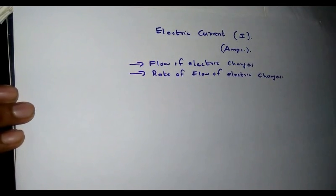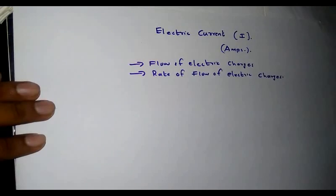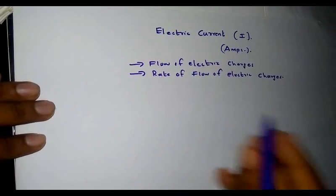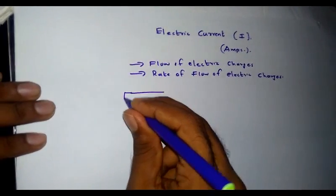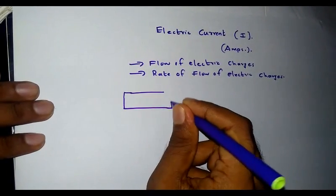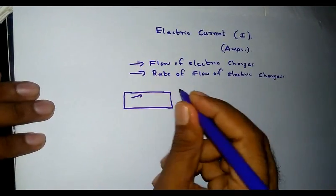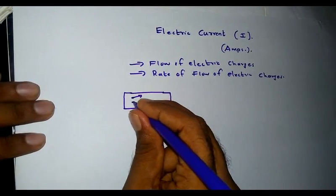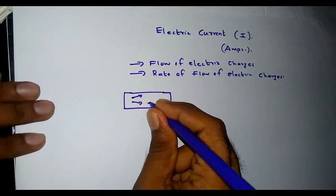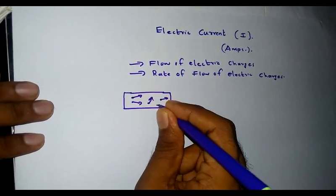Consider a simple piece of a conductor consisting of free electrons which are free to move. These free electrons move in random directions — they are free to move in any direction.